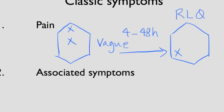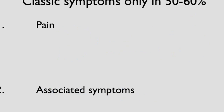Other associated symptoms can include fever, nausea, vomiting — typically after the pain started — and a loss of appetite. These are the classic symptoms in patients with appendicitis. Unfortunately, these classic symptoms only happen in about 50 to 60 percent of patients with appendicitis.